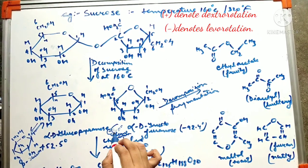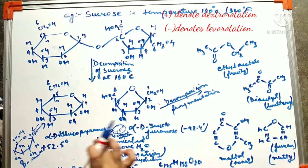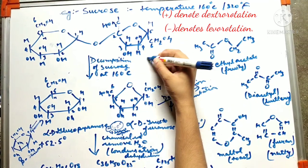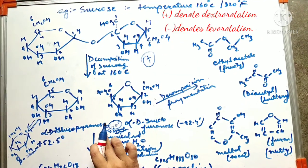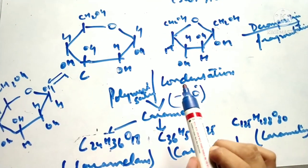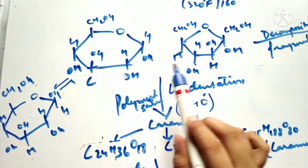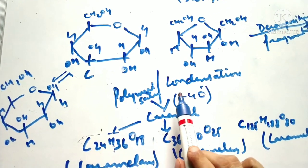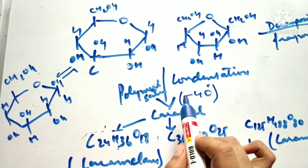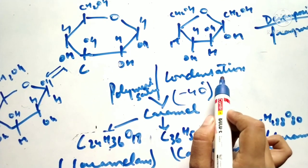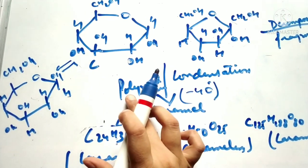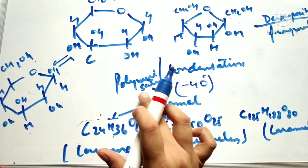Minus means levorotatory, so minus 40 is the net value of these two mixtures. This is why the rotation changes from plus (dextro) to minus (levo), and hence there is an inversion of sucrose. After formation of the monomeric units, there is condensation — meaning there is removal of water from these two units — and hence there is formation of polymers, which is called polymerization.